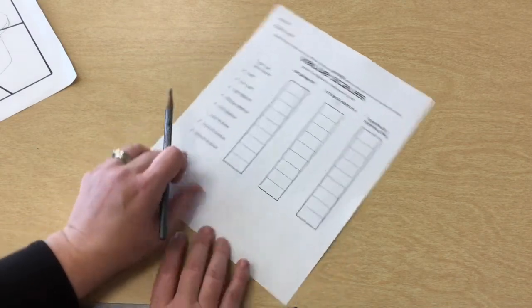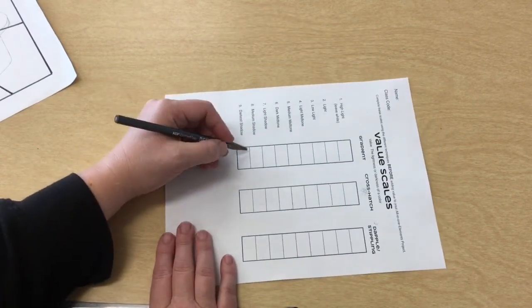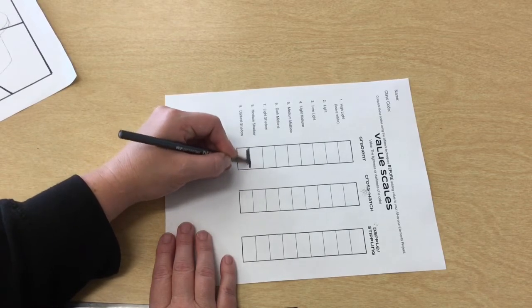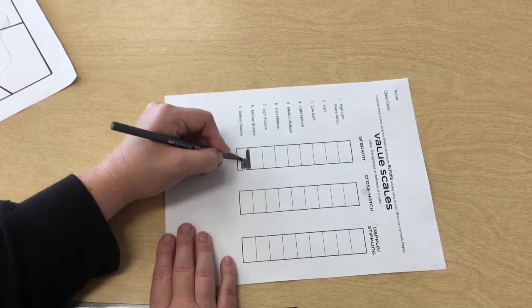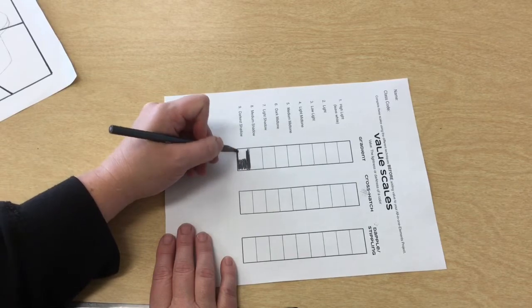So for this first one it's quite easy. I just press as hard as I can with my pencil and I color it in nice and dark.